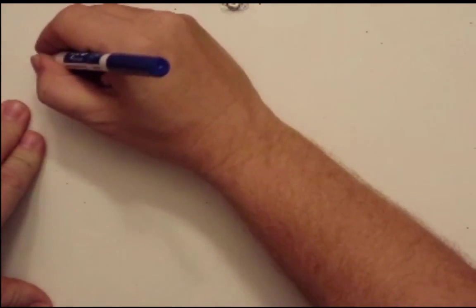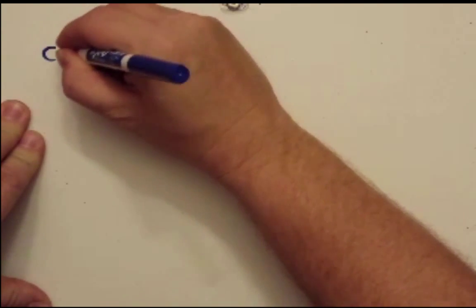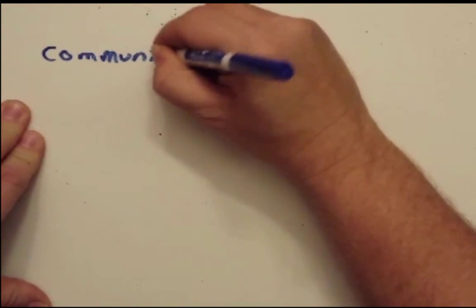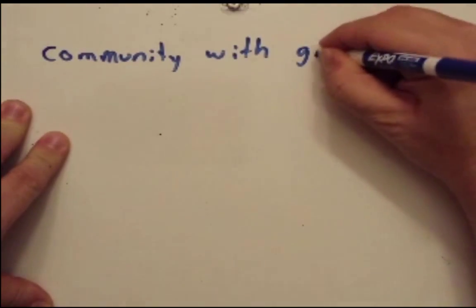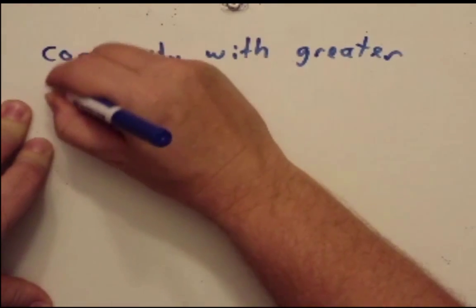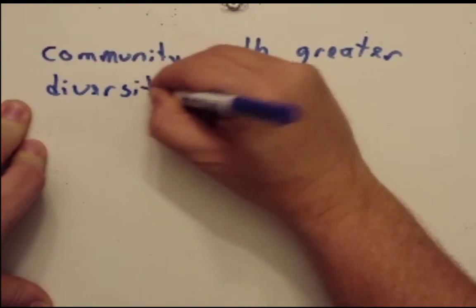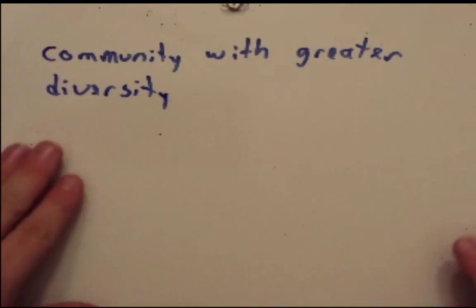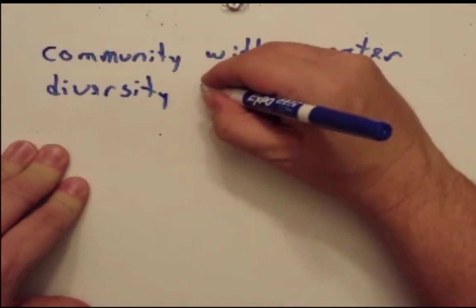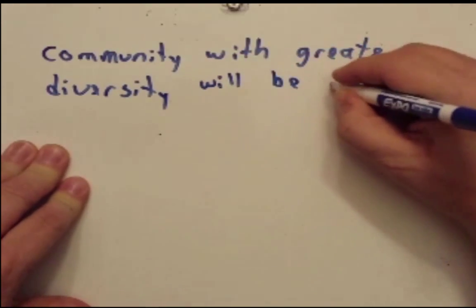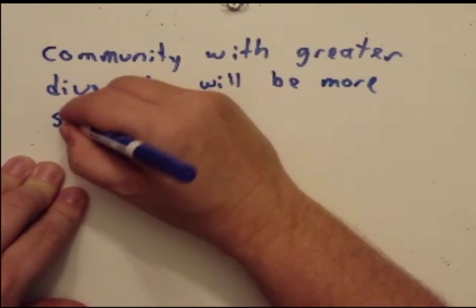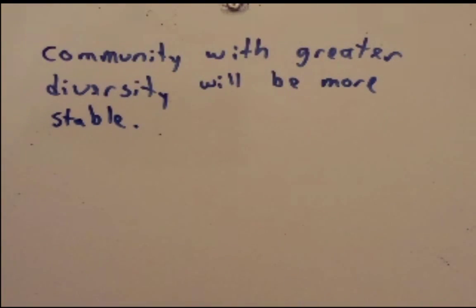Why do we care about diversity? We know that diversity matters to increase stability. A community with greater diversity — considering both species richness and relative abundance — will be more stable. They're more resistant to change; it's harder to affect a community that's very diverse because they'll be able to rebound much quicker.